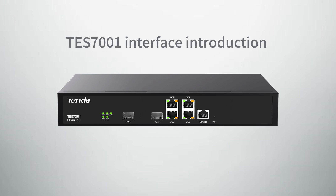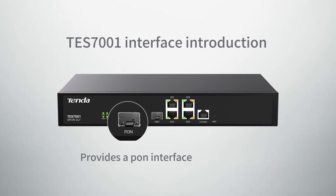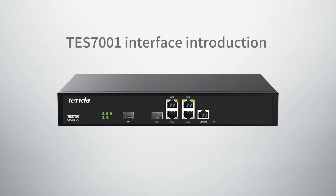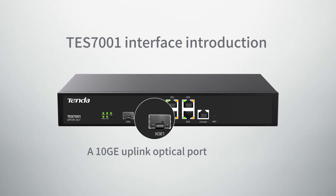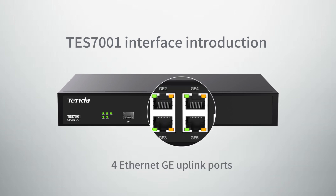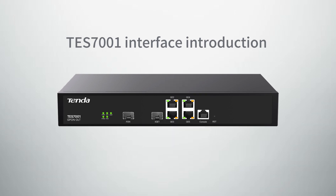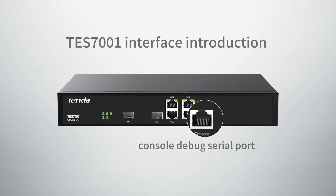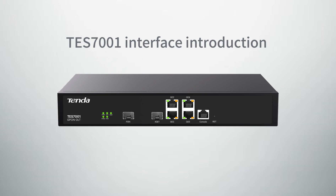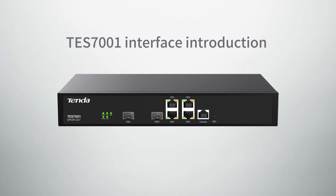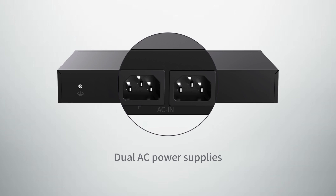TES-7001 interface introduction: it provides one PON interface, a 10G uplink optical port, four GE Ethernet uplink ports, a console debug serial port, a restart button, and dual AC power supplies.